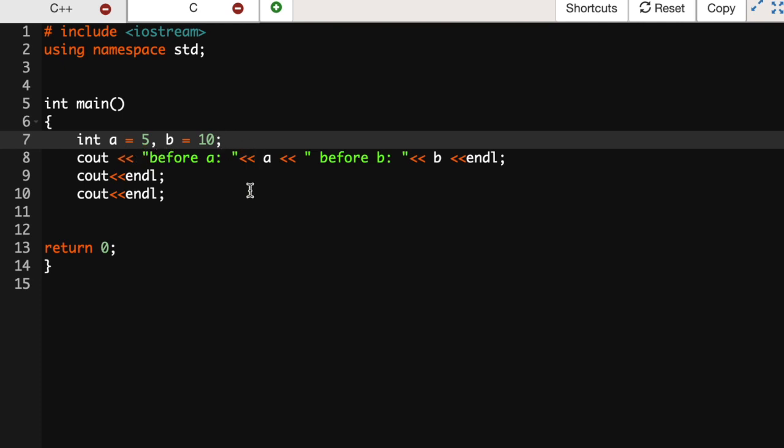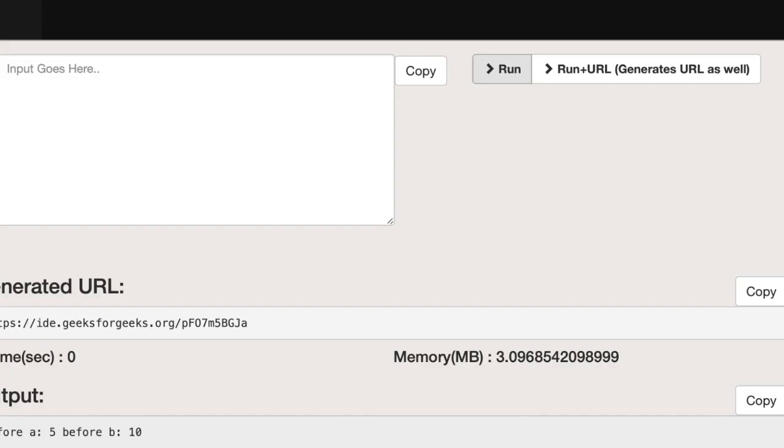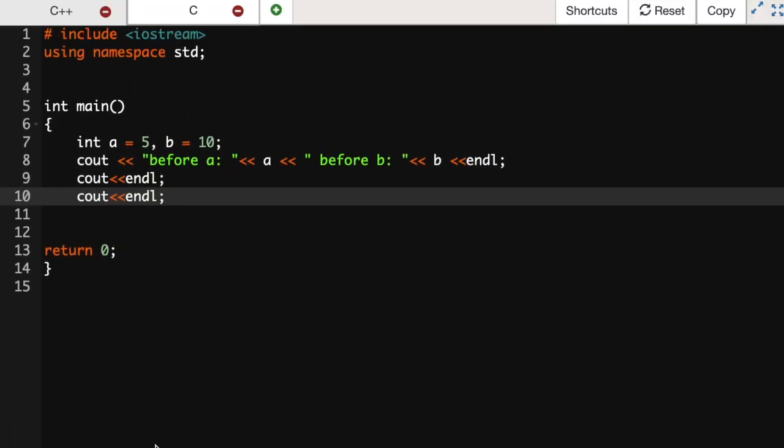I'm just going to print out the contents of a and b before I do anything to them. As you can see we have a is 5 and b is 10 so everything's running as normal.